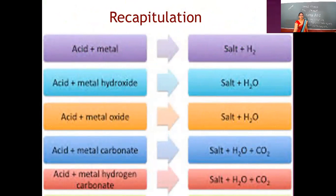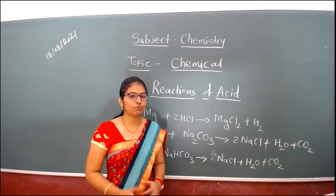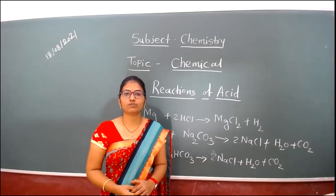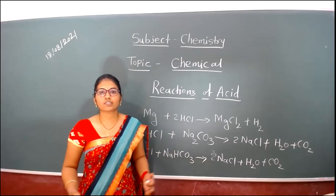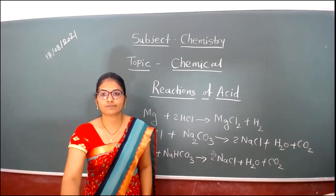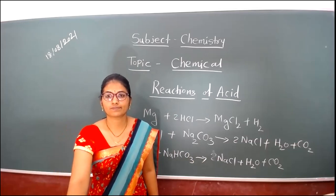These are all the reactions we discussed: reaction of acid with metal, metal oxide, and metal carbonate or metal bicarbonate to form different products. The remaining chemical properties of acid we will discuss in the next session. Thank you everyone.